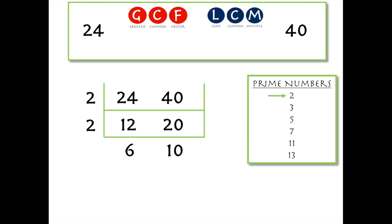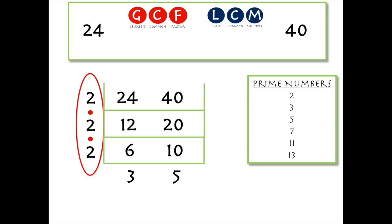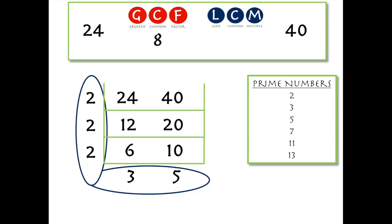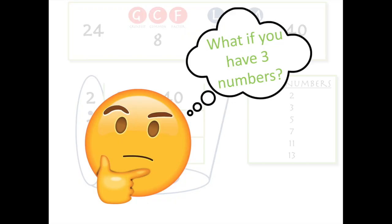We can keep going — does two go into 6 and 10? Yes again. Two goes into 6 three times and into 10 five times. Three and five are both prime with no common factors, so we stop. Looking at the left side, we multiply those numbers together and the greatest common factor is 8. Multiplying all the outer numbers together, we get a least common multiple of 120.